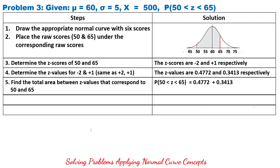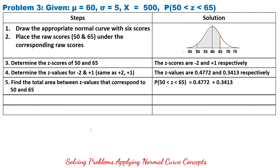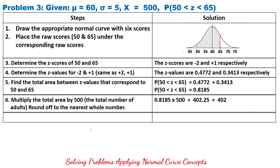Next, find the total area between the Z-values corresponding to 50 and 65. Since the area covers both left and right of the mean, we add the two areas: 0.4772 plus 0.3413 equals 0.8185. Therefore, the probability between Z-scores for 50 and 65 is 0.8185. To get the number of adults, multiply by 500: 0.8185 times 500 equals 402.25, rounded off to 402.